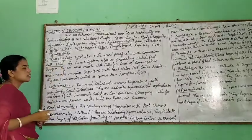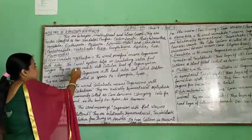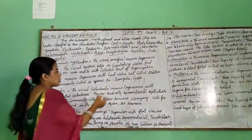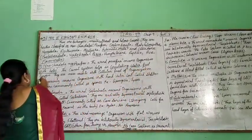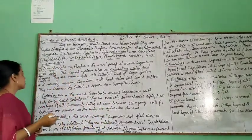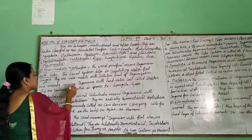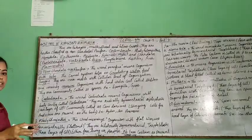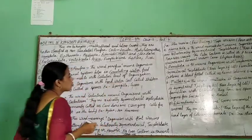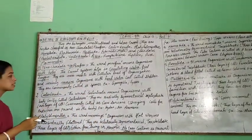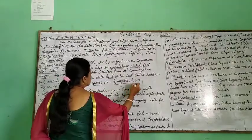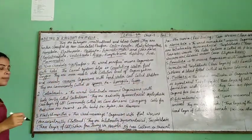Porifera have pores — this is the important point. A canal system circulates water, food, and oxygen through the body. They are mostly marine because their body is situated under water. They have a hard coat called a skeleton. They are commonly called sponges. Examples: Spongilla and Sycon.